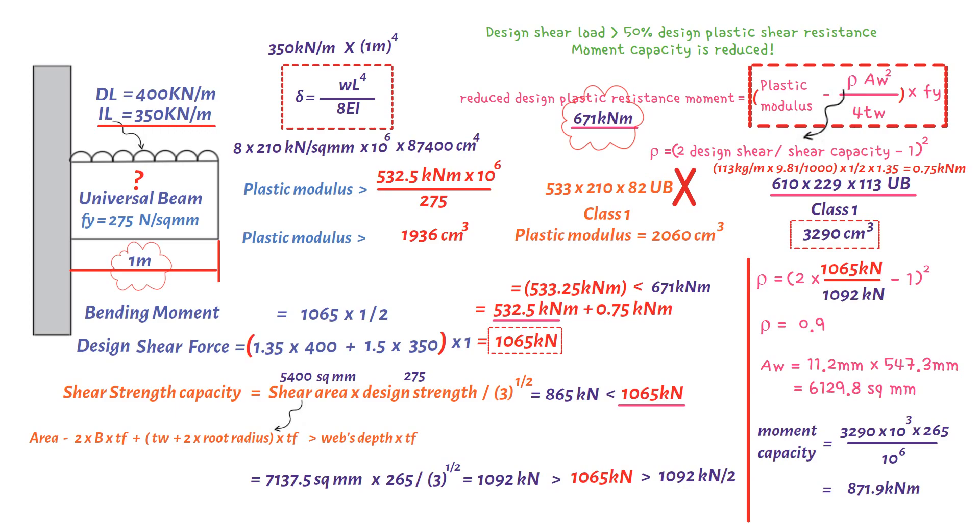We need to convert the section moment of inertia to meters to the fourth, which would be 87,400 times 10 to the power of minus 8.